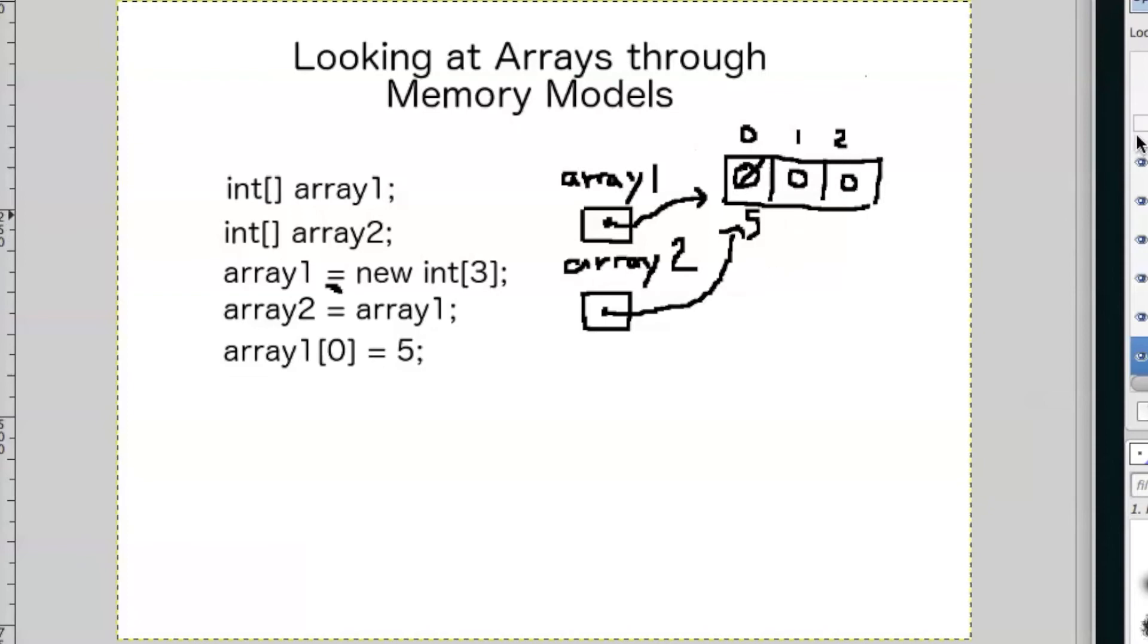And array2 is going to have the same change because they reference the same array in memory. So now when we change index 1 to a 6 from using the reference array2, it's going to change the same thing that array1 is also referencing to.